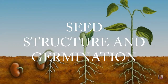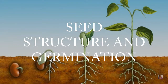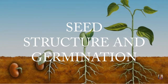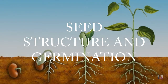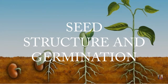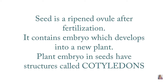In this video, let us explore more about the seed structure and the process of germination. After fertilization, the ripened ovule will become a seed. It contains the embryo which develops into a future new plant, and this embryo has structures called cotyledons.